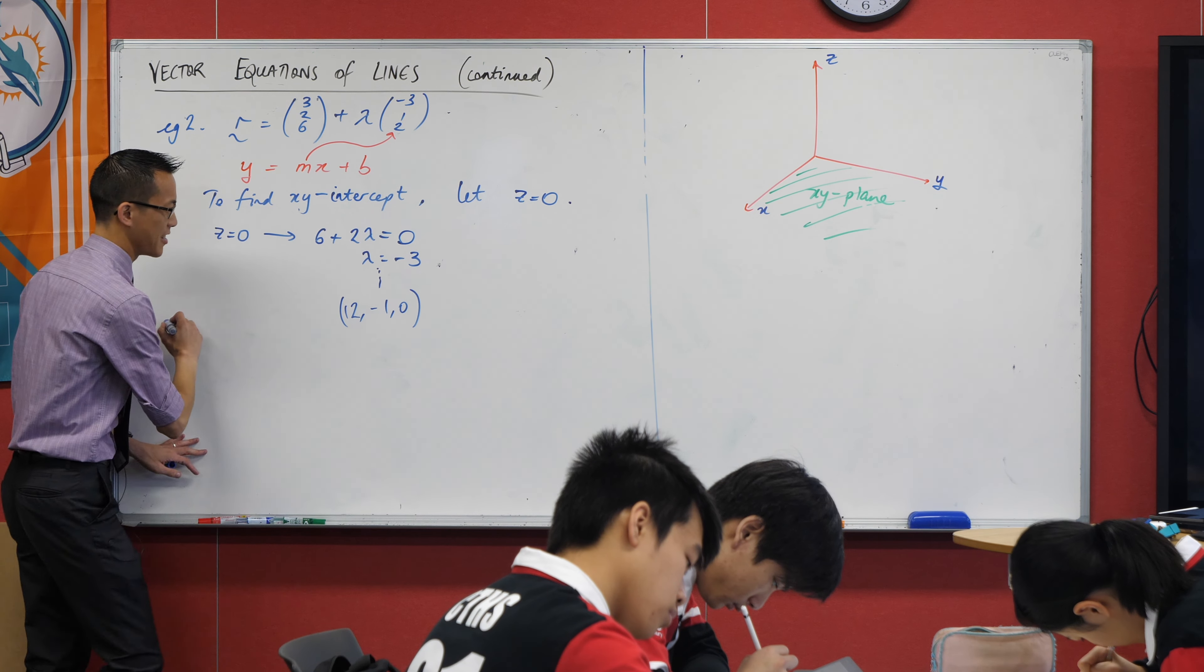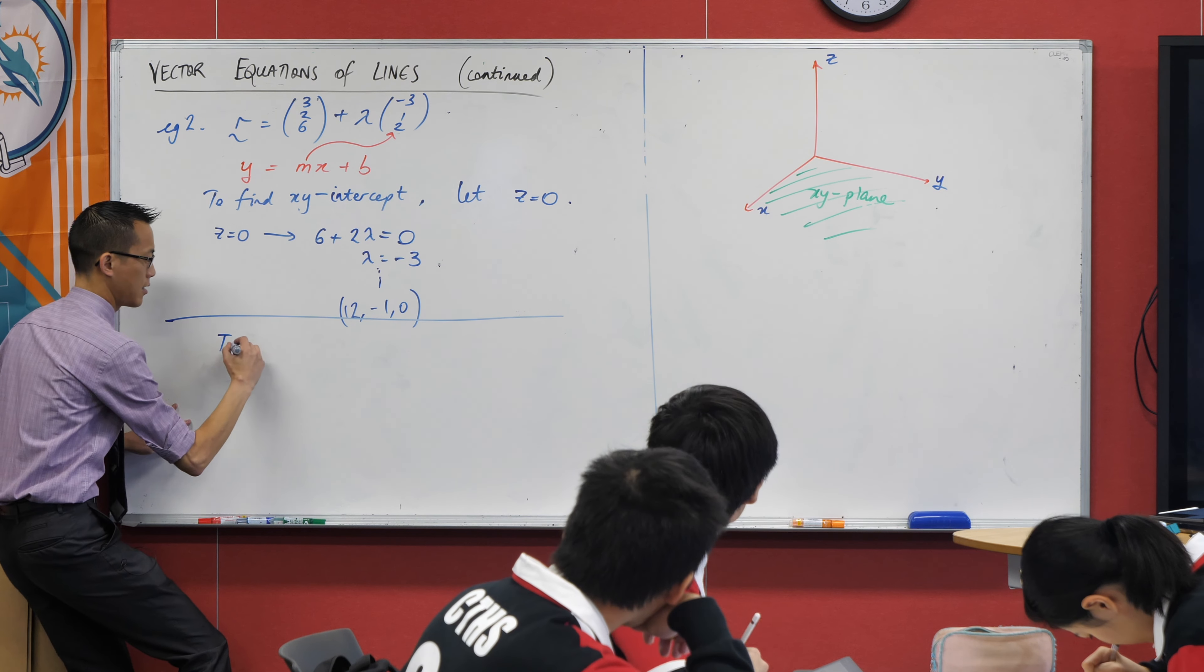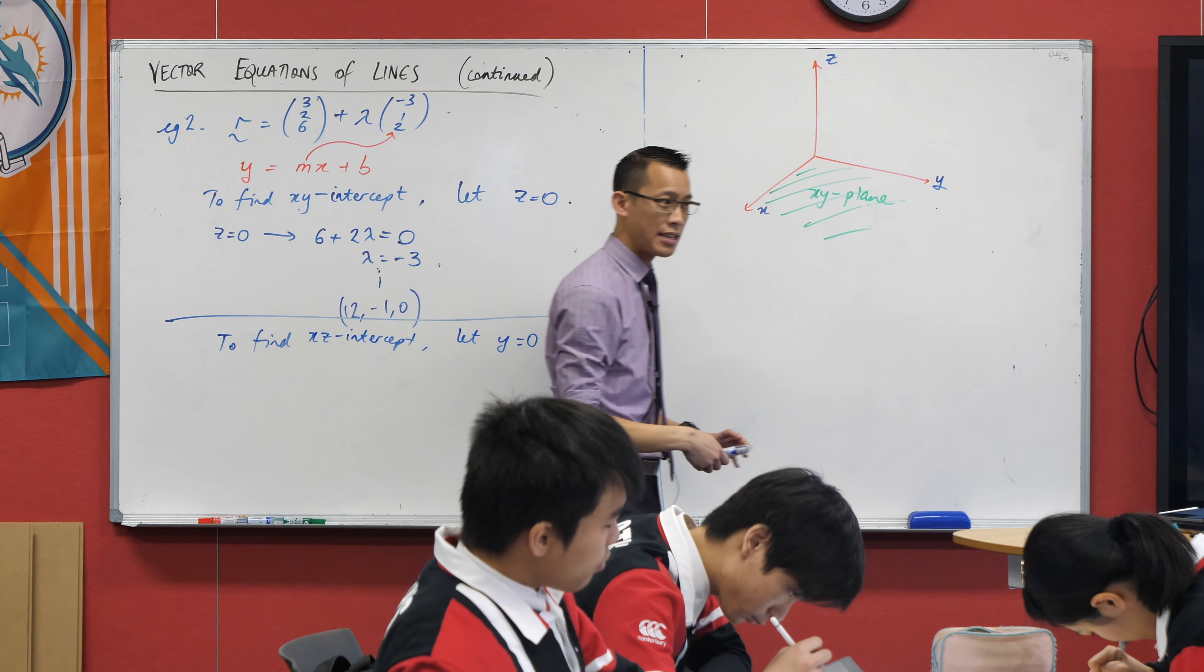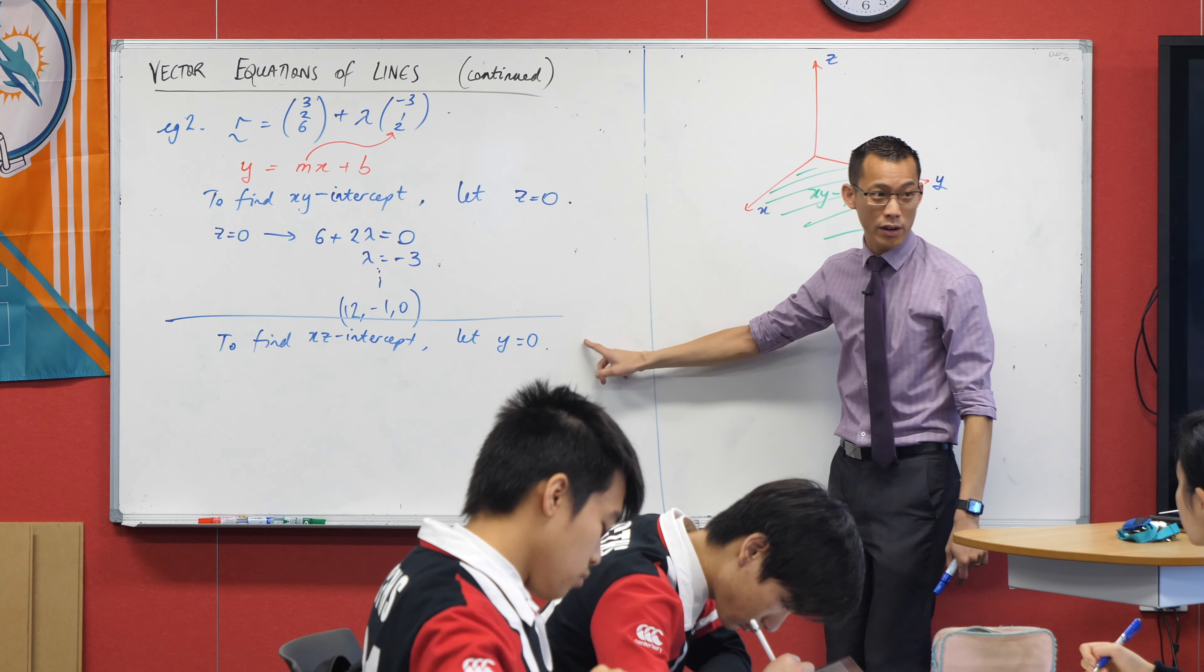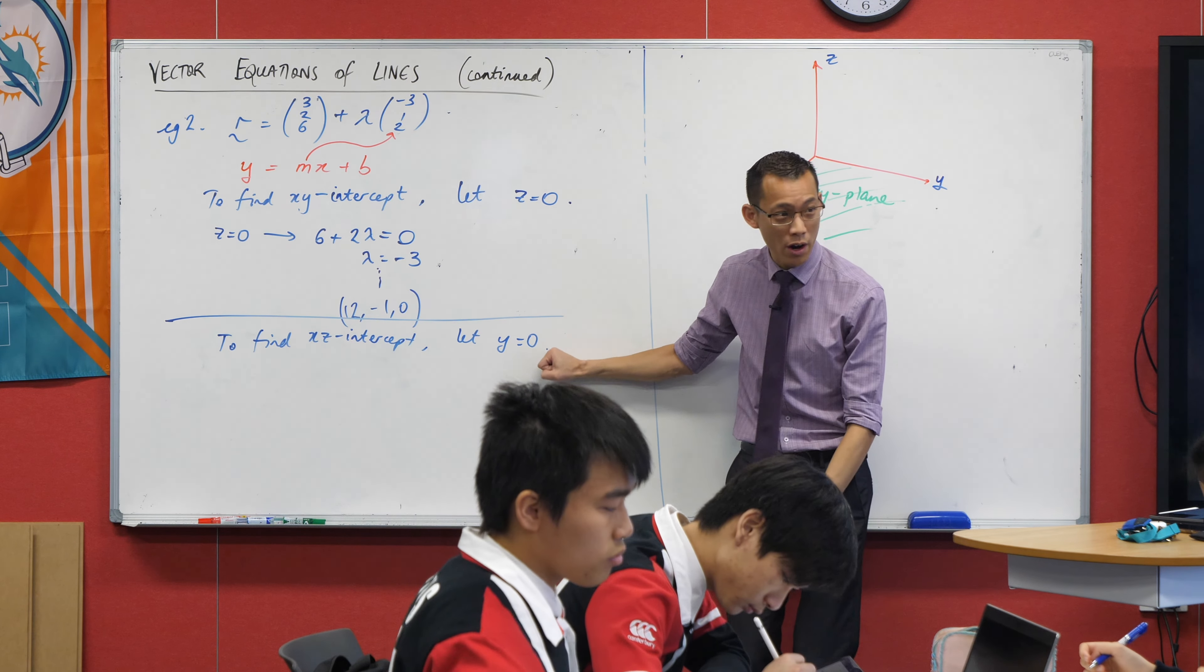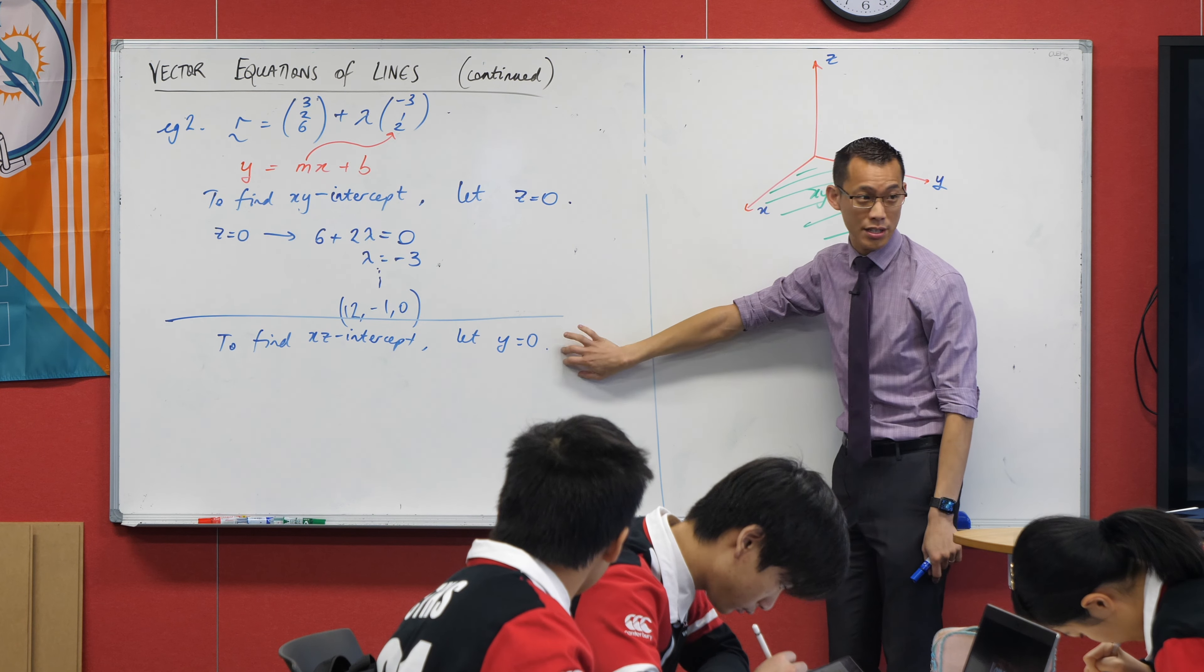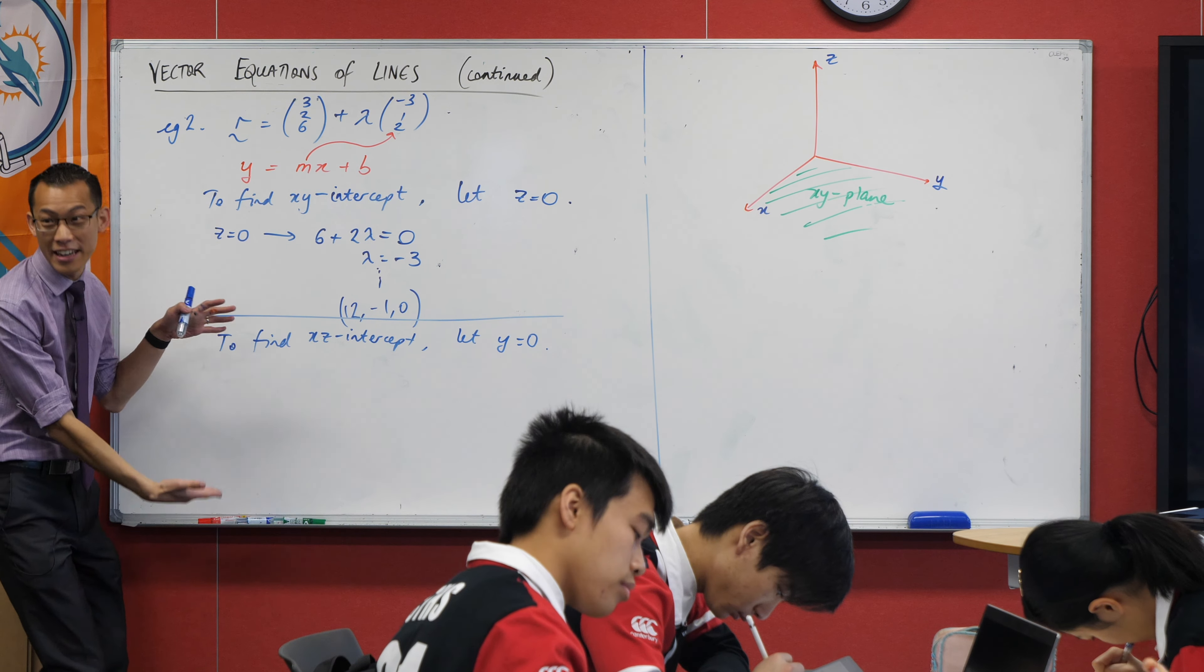So this is going to be 12, negative 1, 0 when we substitute into the x component and the y component. Don't bother substituting into the z component, please. Why? Because you already did that. This is your assumption. Though if you wanted to test, go ahead and make sure you found the right lambda, put it back in, you're like, oh, I didn't get z equals 0. Something's gone wrong. By analogy, what am I going to do to find the xz intercept? I can't remember. To find the xz intercept, what will I substitute? Yeah, fantastic. Let y equal 0.